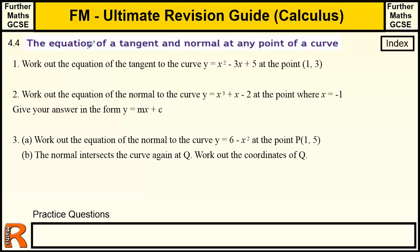I've been able to work out the equation of a tangent and also the equation of a normal at any point touching a curve where you're given the equation of the curve. The key idea is we find out the gradient of the tangent by differentiating the curve and picking the point that we're given to then give us the gradient of the tangent. So the gradient function gives us the gradient of the tangent at any point.